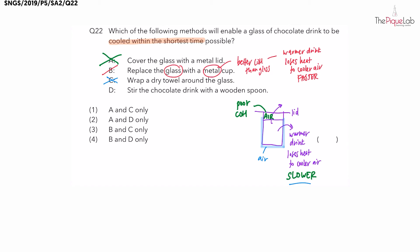Let's take a look at the last method: stirring the chocolate drink with a wooden spoon. Do not let the material of the spoon distract you from the action of stirring. What happens when you stir the chocolate drink? You actually increase the exposed surface area (ESA) of the liquid in contact with the cooler surrounding air. When you stir a drink, the surface is no longer flat but curves inwards, especially when you stir quickly. The exposed surface area is larger, which allows that warmer drink to lose heat much faster to the cooler air.